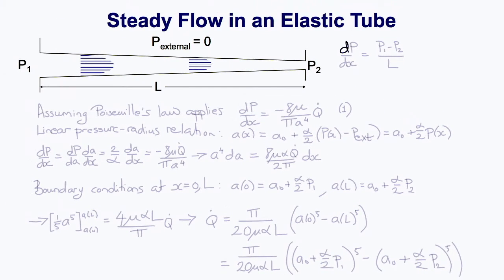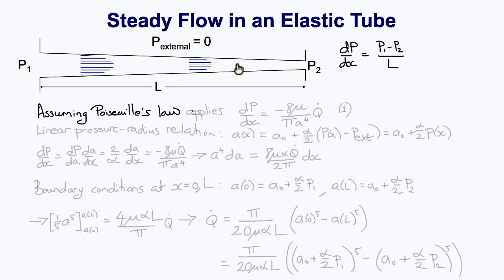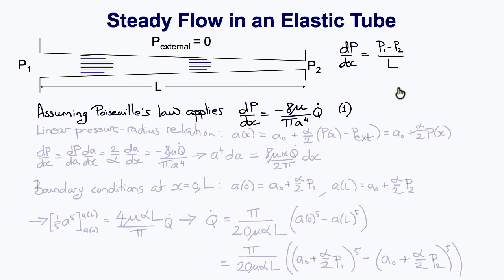So how does the elasticity of the vessels affect the blood flow? One of the first consequences is that because there is a pressure drop along the vessel that creates the flow, if the vessel is elastic then the tube will tend to taper because the pressure is lower at the downstream end. If we assume that Poiseuille's law applies, then that pressure gradient is equal to minus eight mu over pi times a to the fourth times q — we'll call that equation one.